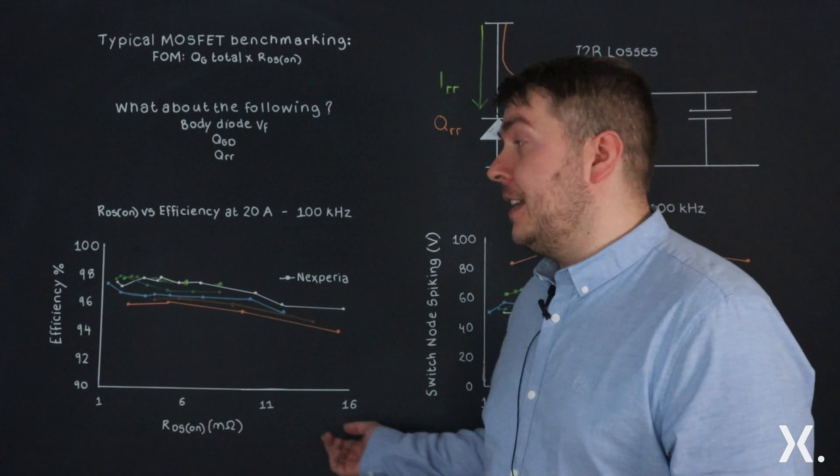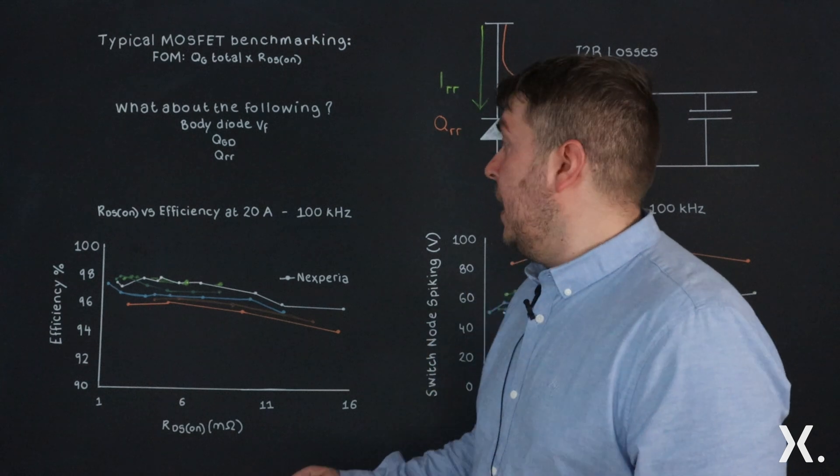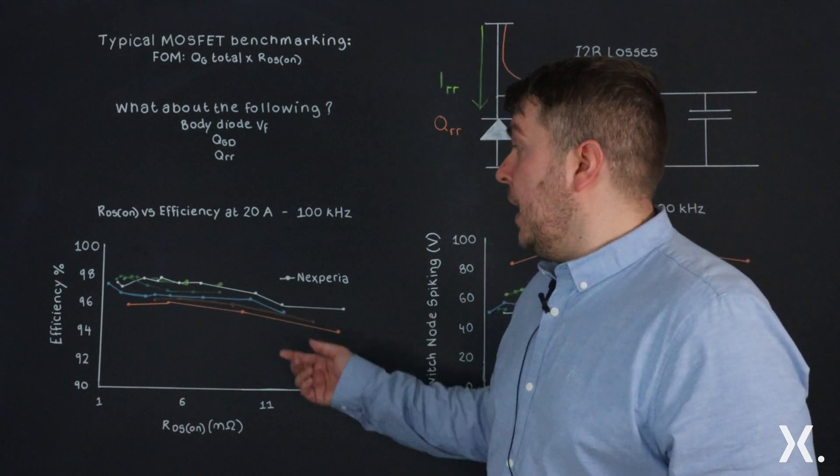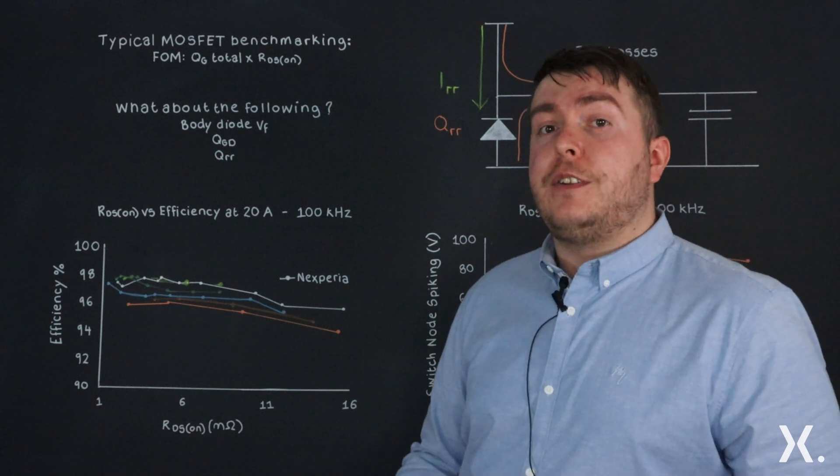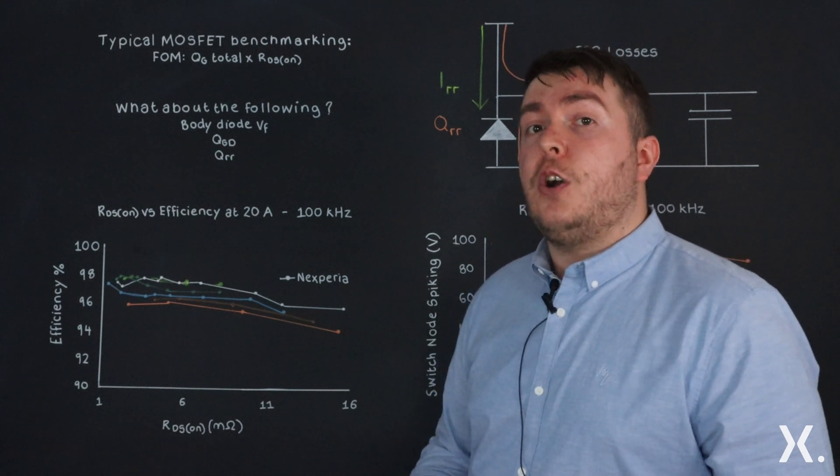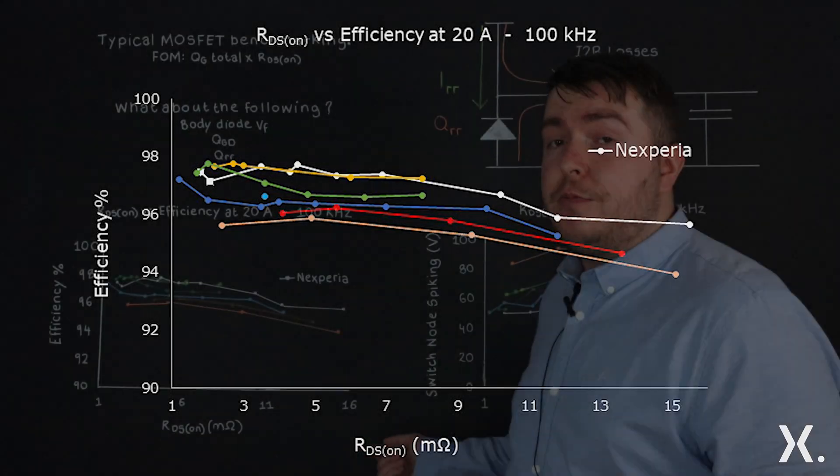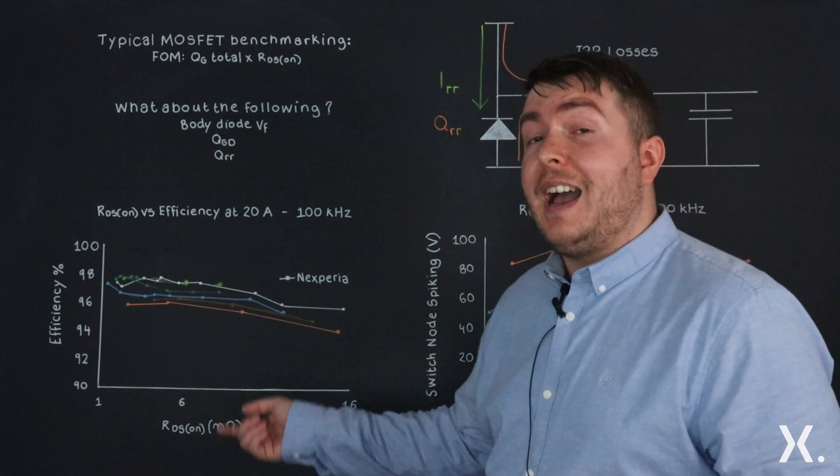The graph here is RDS_on versus efficiency at 20 amps with 100 kilohertz switching. Each color represents a different vendor's products. These products are 80 or 100 volts. The white line represents Nexperia's Nexpower 18 100 volt products, but what we can take away is that we have a wide range of RDS_on products with high efficiency.